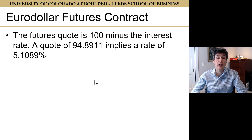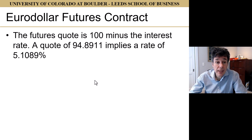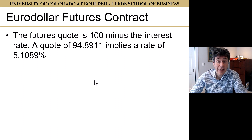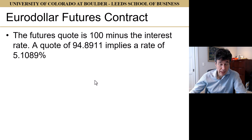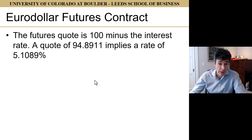The futures quote is $100 minus the interest rate. A quote of $94.8911 implies a rate of 5.1089%. So you take $100 minus the quote, and that gives you the rate. If we know the rate, we can take $100 minus the rate, and it gives us the quote.